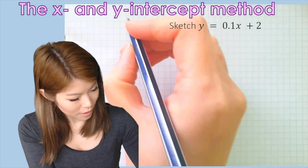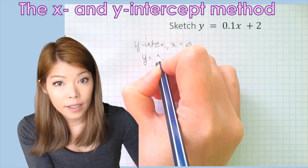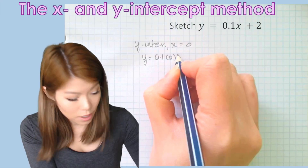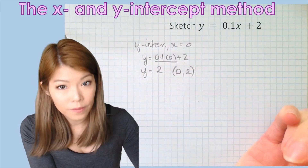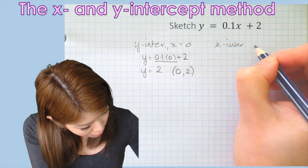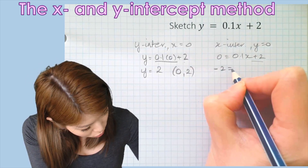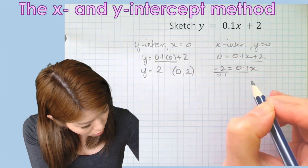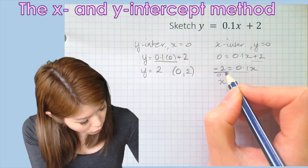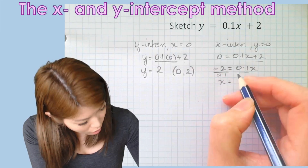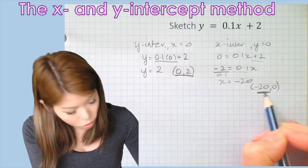Let's find the y-intercept first — at x equals 0, we have y equals 0.1 times 0 plus 2, so y equals 2. Our first coordinate is (0, 2). For the x-intercept at y equals 0: 0 equals 0.1x plus 2, bring the 2 over to get minus 2 equals 0.1x, divide both sides by 0.1 — minus 2 divided by a tenth is the same as minus 2 times 10, which is minus 20. So our coordinate is (minus 20, 0). Now we have our two coordinates and can sketch the graph.